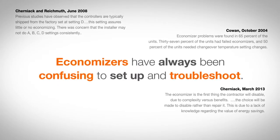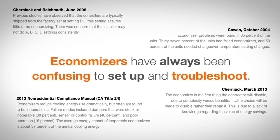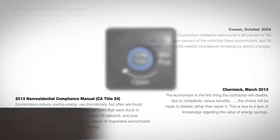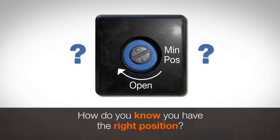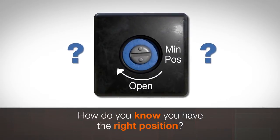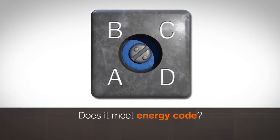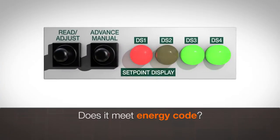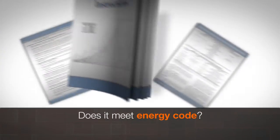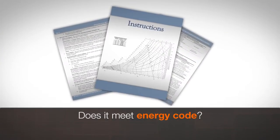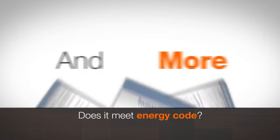Economizers have always been confusing to set up and troubleshoot. Small dials to turn with no indication of what the positions mean, selector switches with letters, mysterious blinking LEDs, installation instructions with psychometric curves, and more.